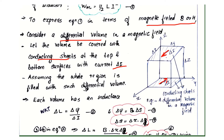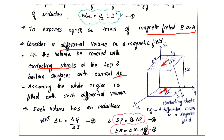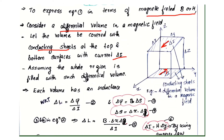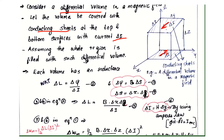Starting from the expression Wm = ½LI², we write δWm = ½ δL · δI². Now, δL is expressed as δL = δψ / δI, where ψ is the flux linkage.